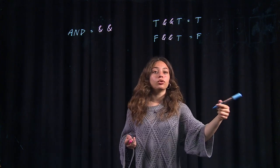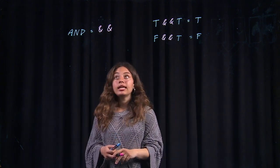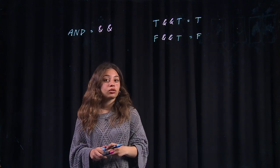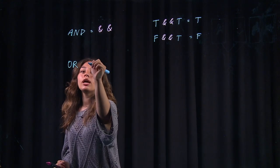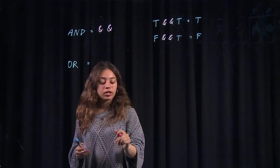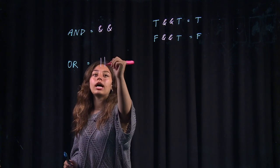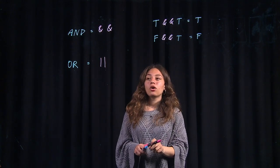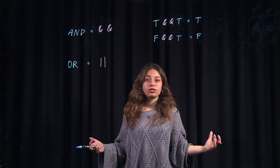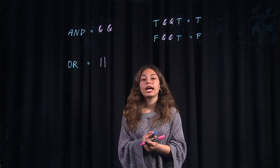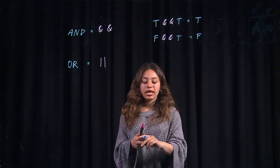The second compound conditional operator I can use in plain English, we say or and in coding language, we use two vertical lines to represent it. So with an or, if I have two conditional statements, only one of them needs to be true for my entire statement to be true.